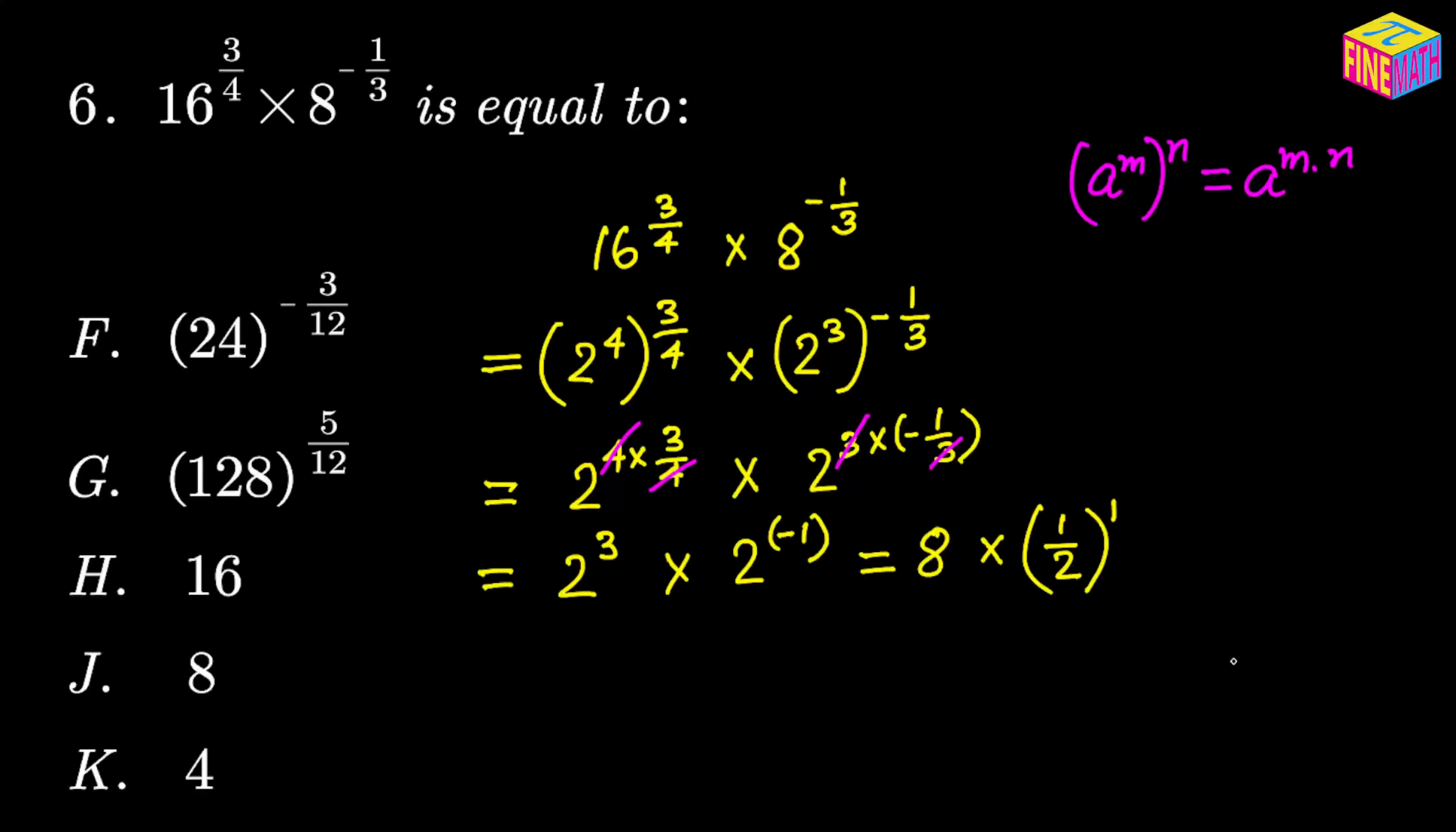I always want to convert into the positive exponent. As you can see, this is nothing but 8 times 1/2, and that is actually equal to 4. So the correct answer is 4, and if you look at our answer options here on the left, 4 is under option K. So K is the correct option choice.